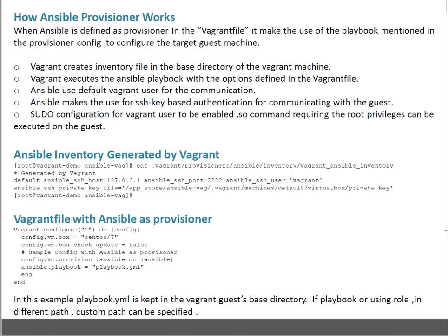Whenever the Vagrant machine comes up, it checks which SSH ports are already in use — the NAT-ed port. Then it automatically picks a free port and updates this particular file. It is using vagrant as the SSH user — you can see this is automatically generated; I haven't added or updated this file manually. This is the private key path, which is the Vagrant private key used for passwordless communication with the guest.